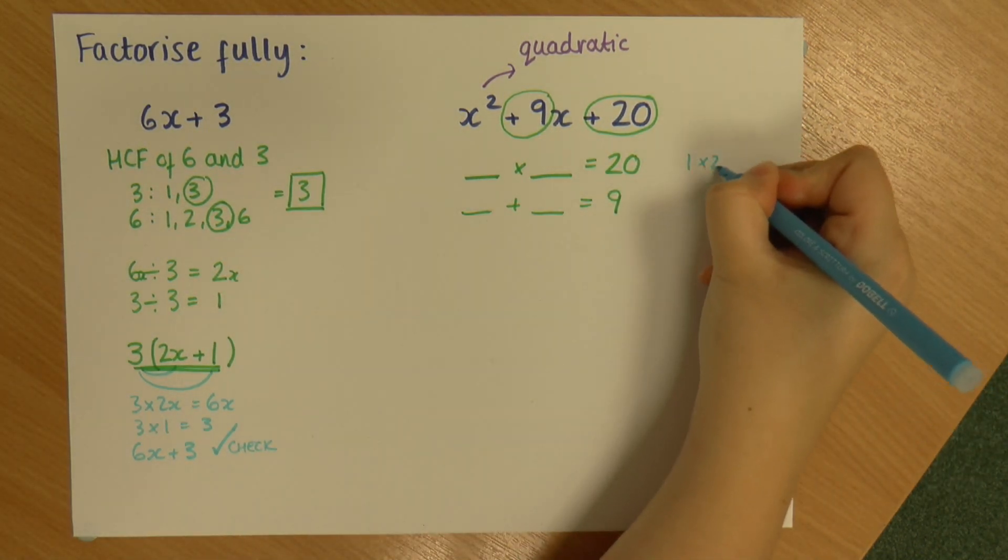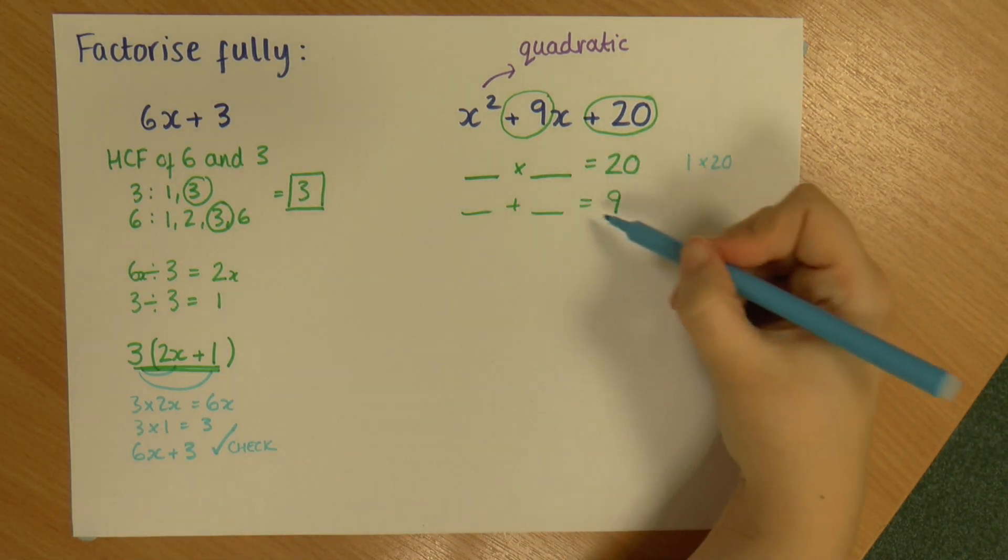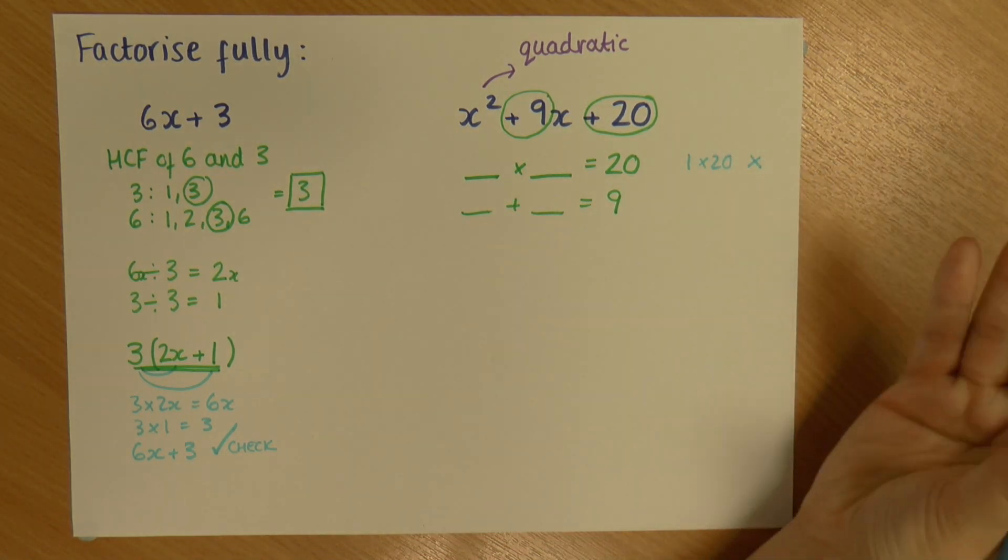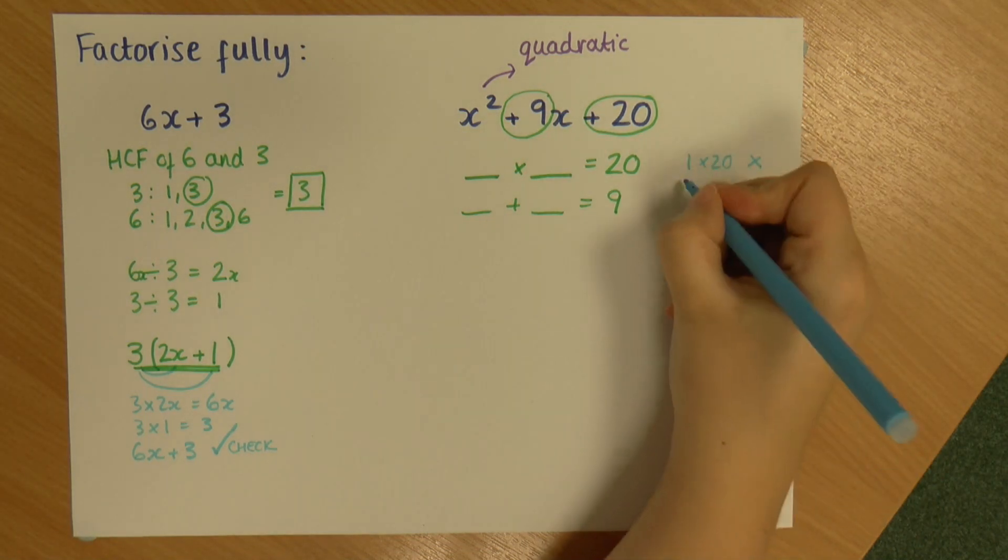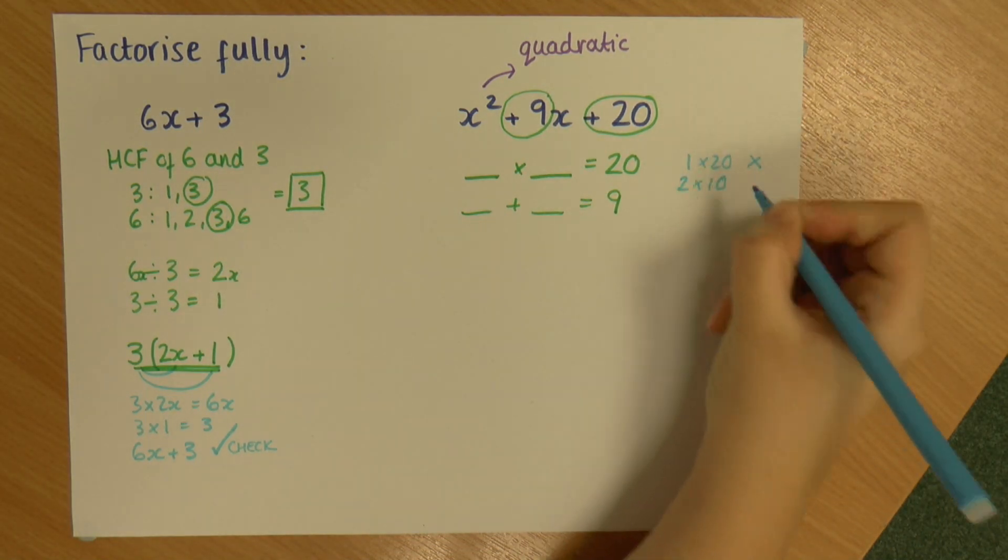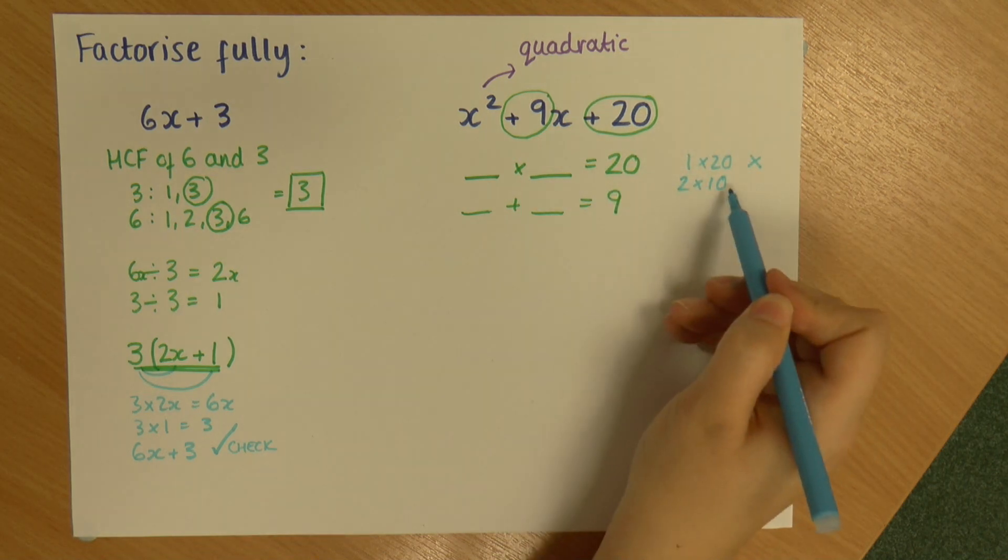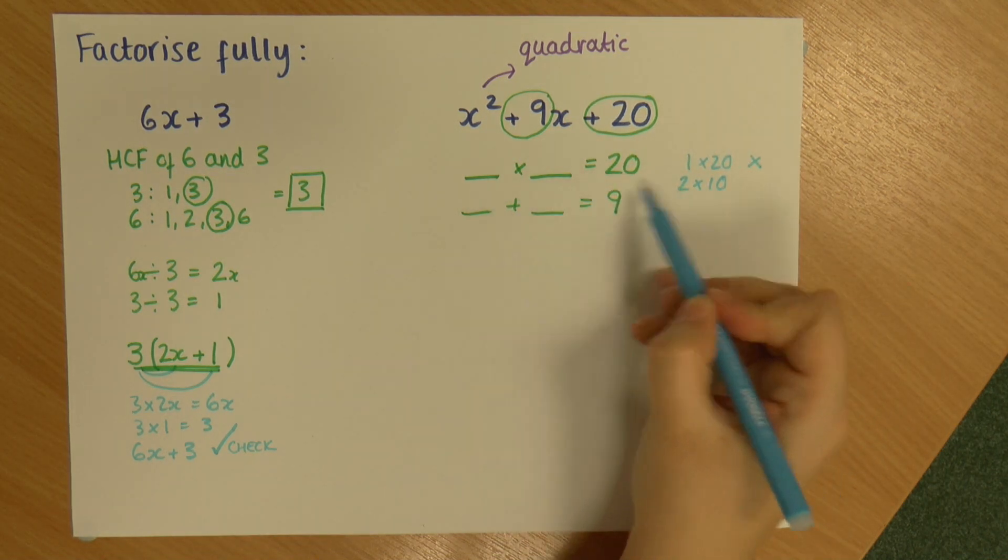So 1 times 20. Does 1 add 20 give us 9? No. Okay so it's not that. So we're looking for a pair of numbers essentially. 2 times 10. So 2 times 10 is 20. 2 add 10 is not 9. So it's not that one either.